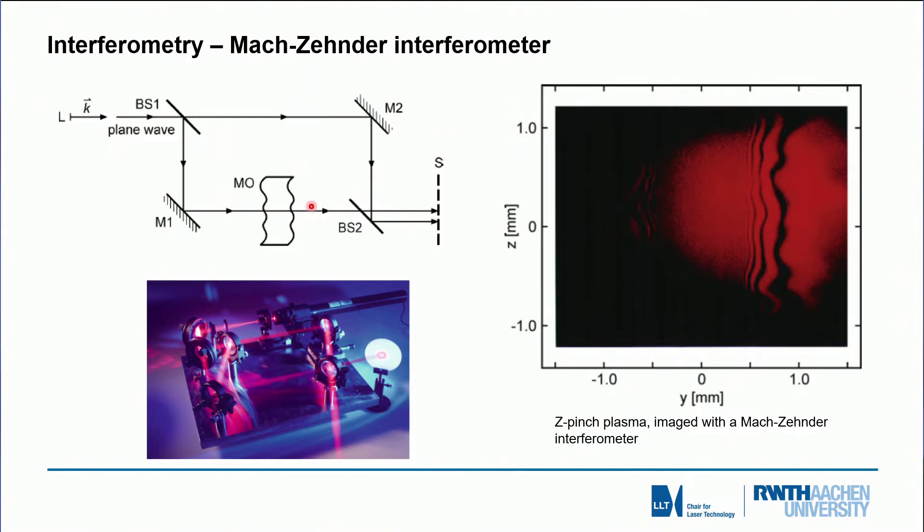So in this interferometric setup we can measure changes of the index of refraction quite precisely. In this case here the change of refraction was due to a plasma pinch, a discharge, a plasma discharge which is used for extreme ultraviolet beam sources in the wavelength range of 13 nanometer for next generation lithography.